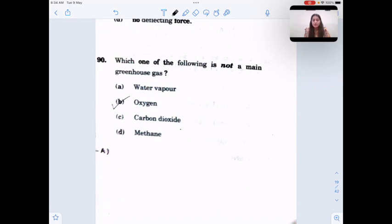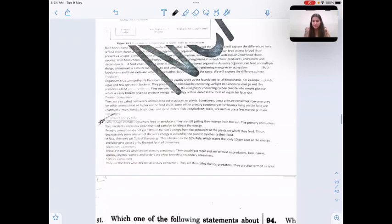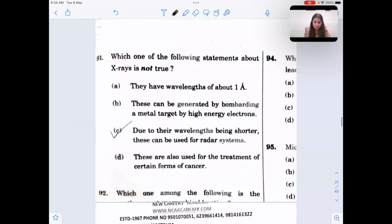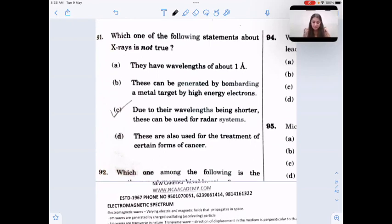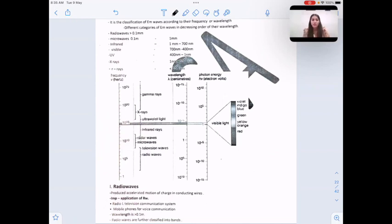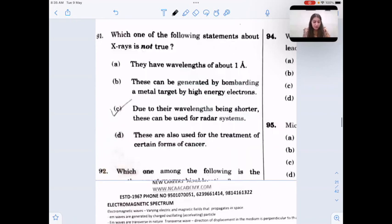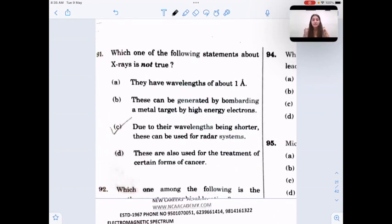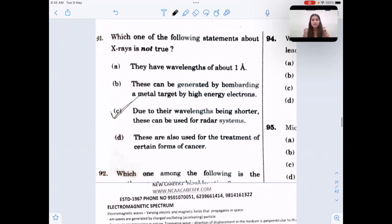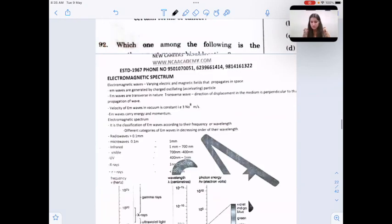Which one of the following is not a main greenhouse gas? Water vapor, carbon dioxide and methane are very important greenhouse gases. Oxygen is not a greenhouse gas. Ozone is a greenhouse gas but not a major one. Which one of the following statement about x-rays is not true? It's very important to remember wavelength range of few electromagnetic rays. We know the wavelength range of x-rays is 1 angstrom and they are produced by bombarding a metal target by high energy electrons. They are used to treat certain forms of cancer but they are not used for radar system. So the statement which is not true is option C.